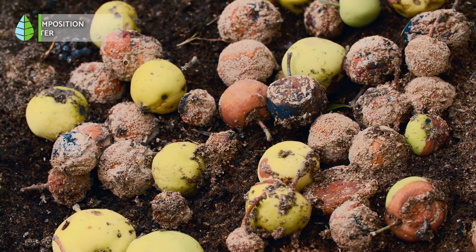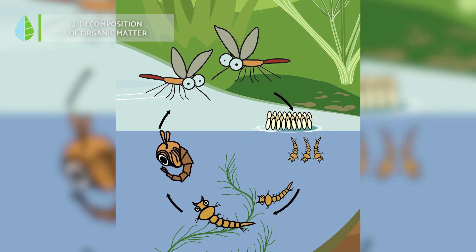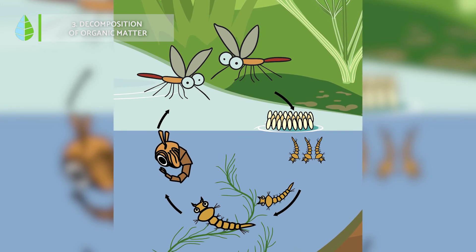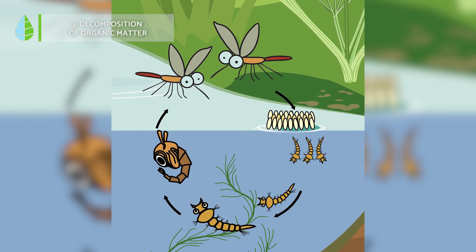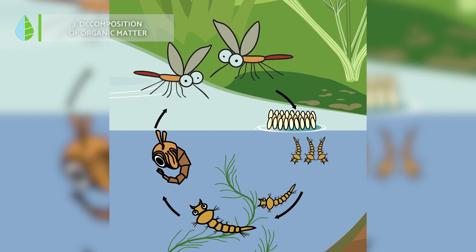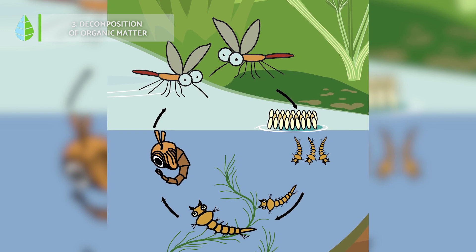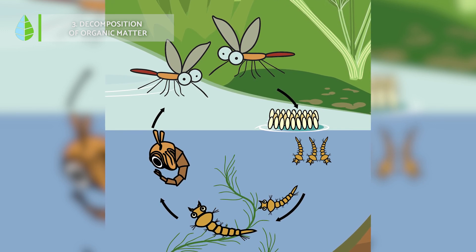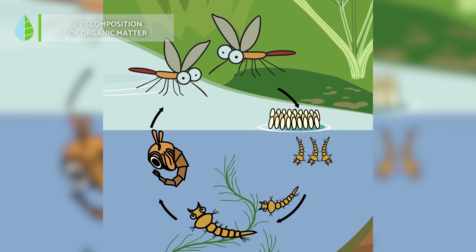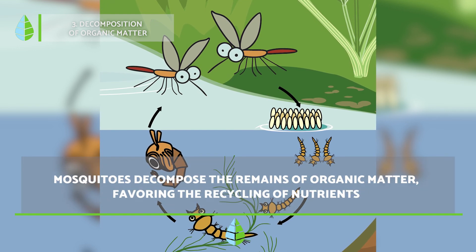Decomposition of organic matter. During the life cycle of a mosquito, these amazing insects go through four stages of development: eggs, larvae, pupae, and adults. Each of these stages takes place under certain environmental conditions, fulfilling different functions within the balance of ecosystems.